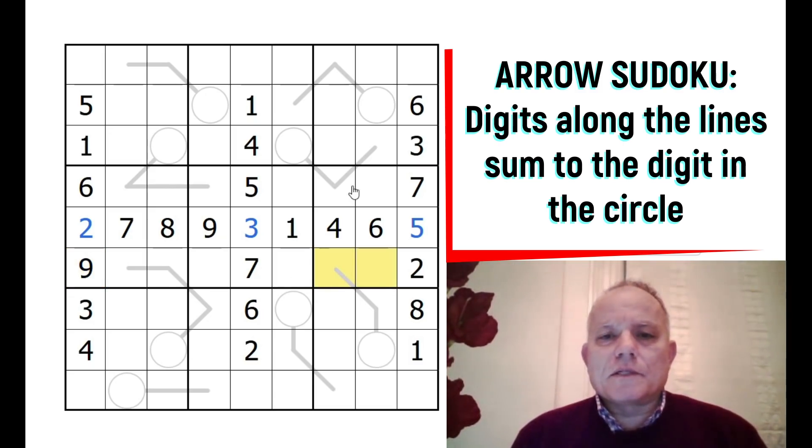Look at this 9 - that's acting on those two cells, so 9 has to be on one of those two. Nine can never be on a line which has more than one constituent because they'd add up to more than 9. So 9 has to be there. This must be 1 or 3. Eight in this box must be there.